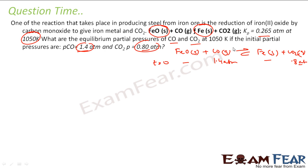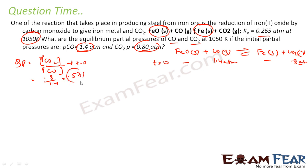The question is: will the reaction go in the forward or backward direction? Let us find the value of QP. QP is the pressure of CO₂ by the pressure of CO at the initial conditions. That is 0.8 by 1.4, which is 0.57. The value of Kp is 0.265 atm. Comparing these two values, QP is greater than Kp.